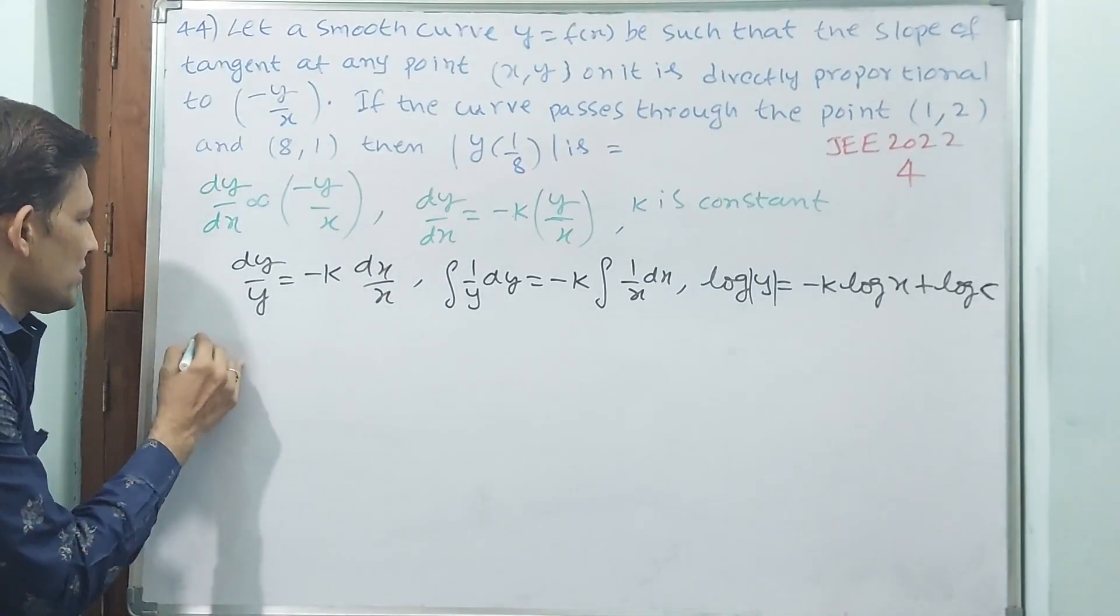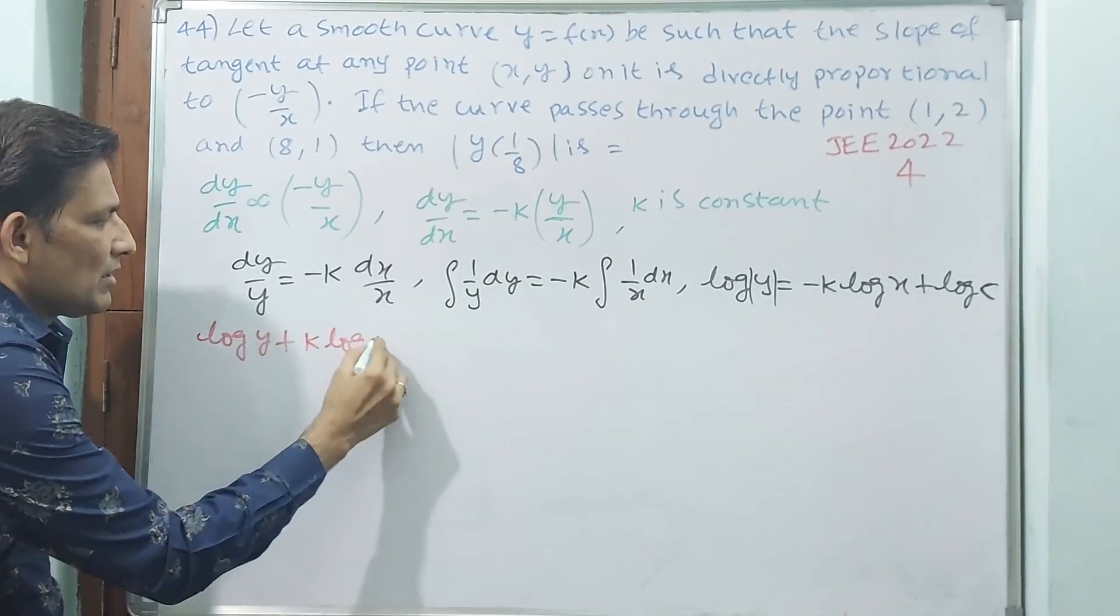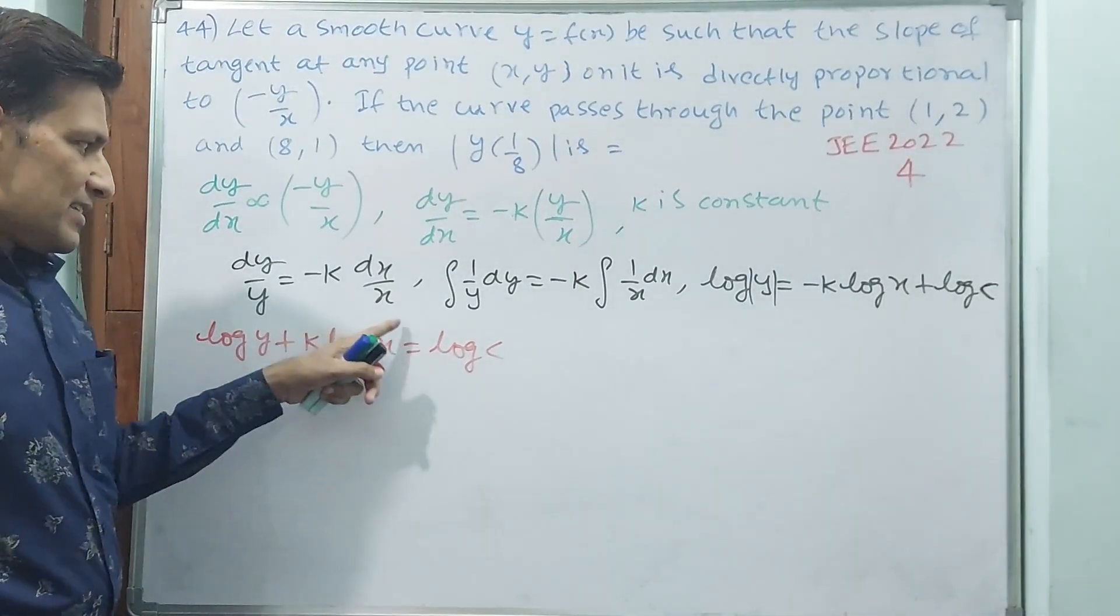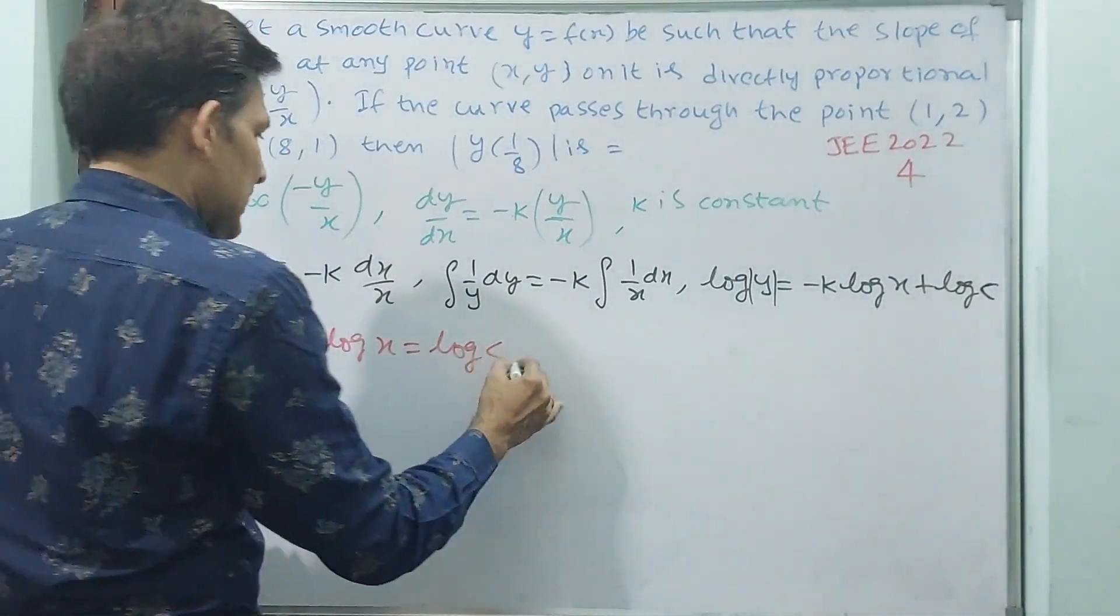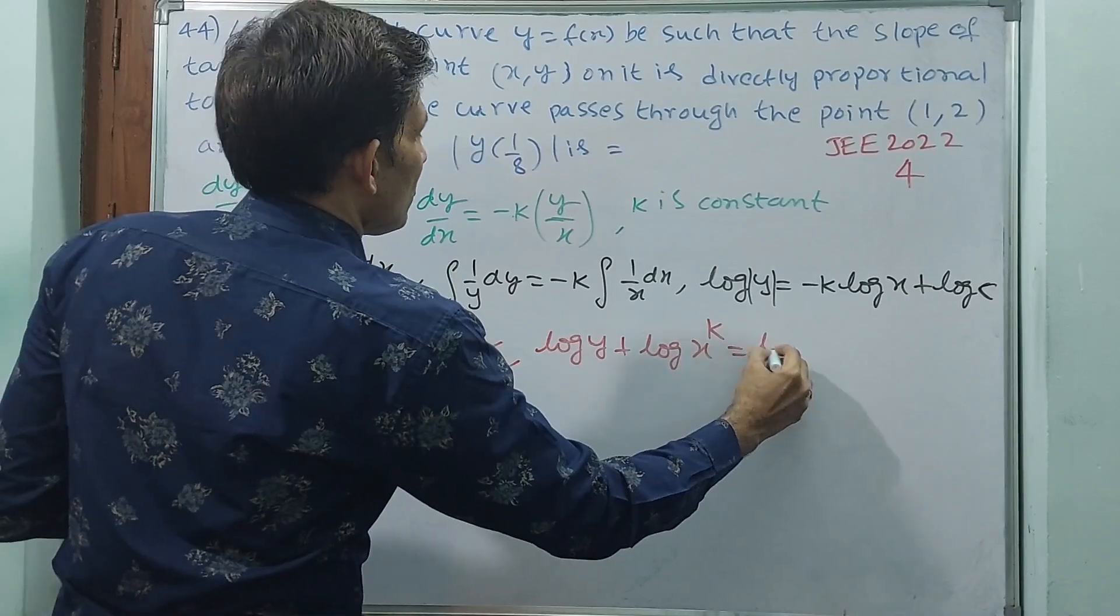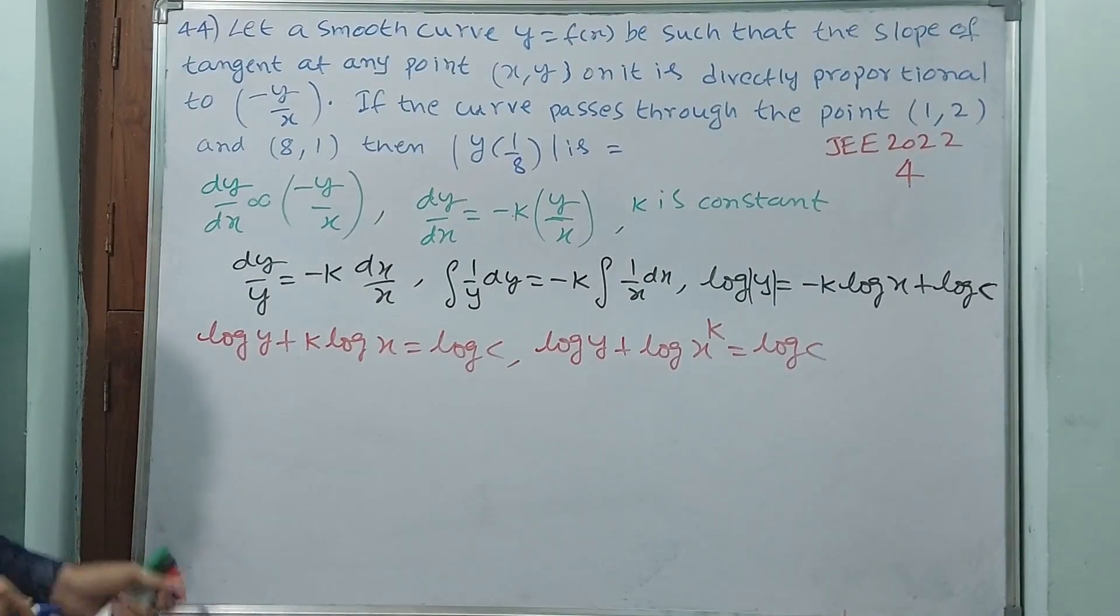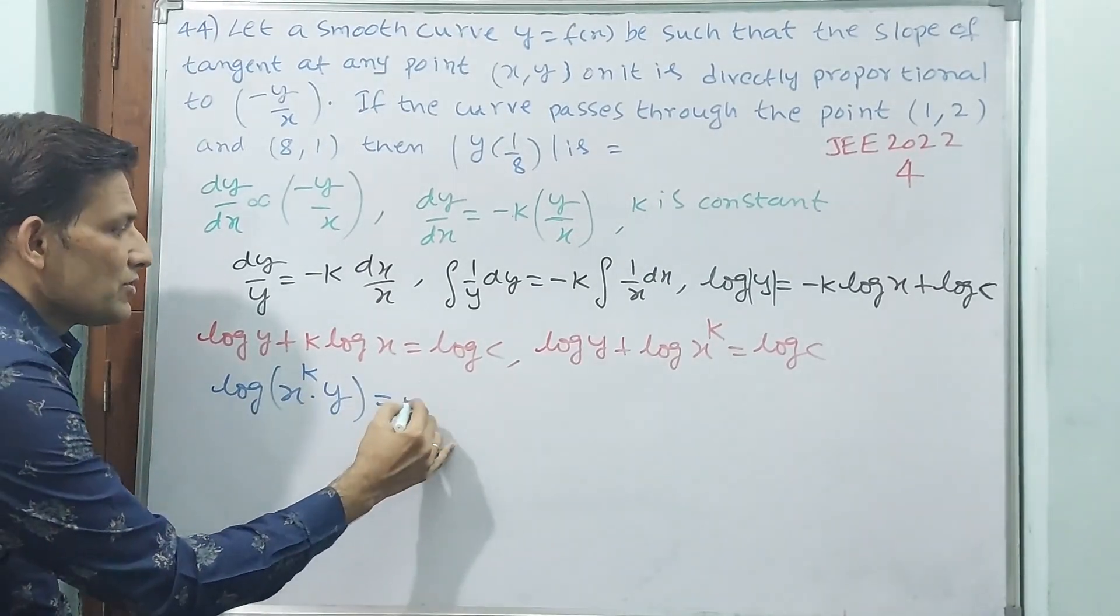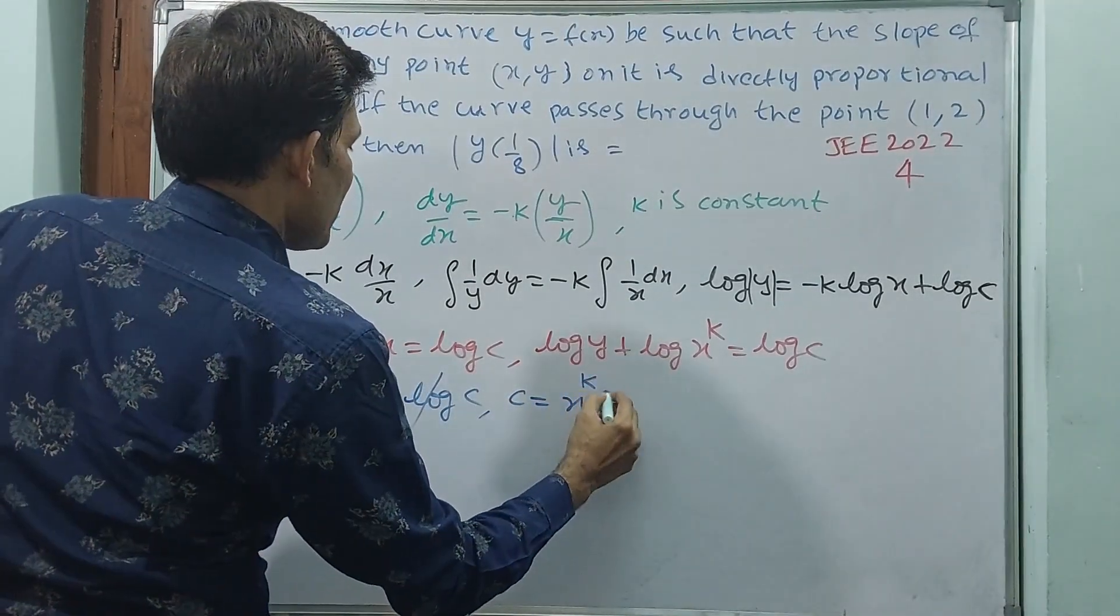Now you bring it to that side. Log of y plus k log x is equal to log c. See, until you set this k to the power, you cannot directly do this log element calculation. Log y plus log of x to the power k is equal to log c. Now both logs are there, you can do calculation. Multiplication. See, log of x to the power k into y is equal to log c. Now you can say x to the power k into y is equal to c.